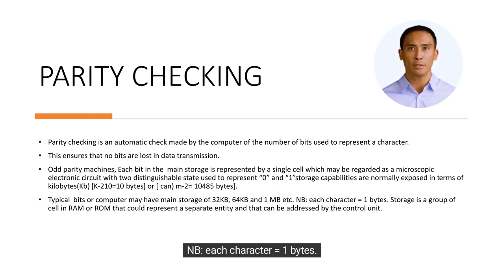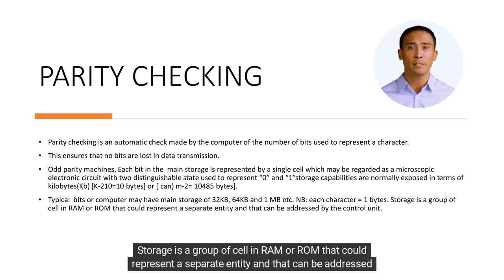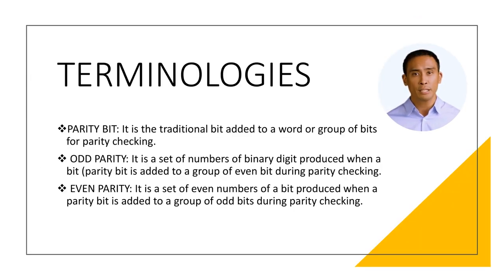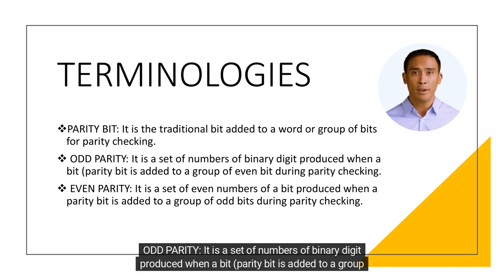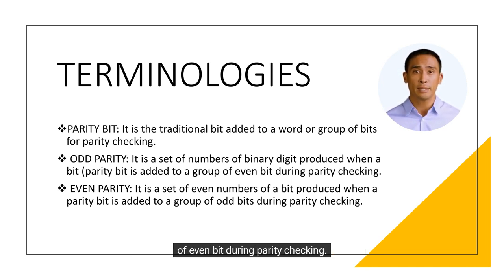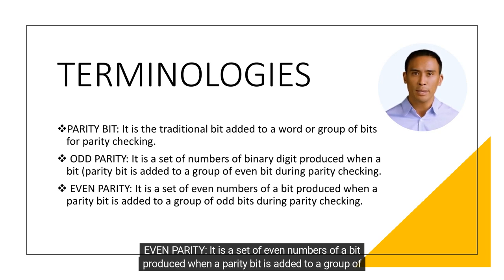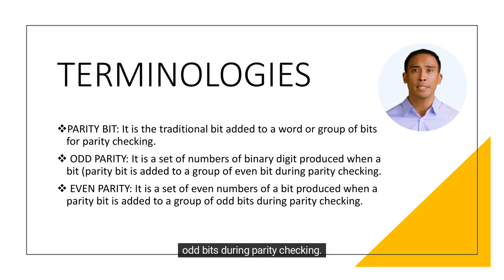Storage is a group of cells in RAM or ROM that can represent a separate entity and can be addressed by the control unit. Terminologies: parity bit — the traditional bit added to a word or group of bits for parity checking. Odd parity — a set of odd numbers of binary digits produced when a parity bit is added to a group of even bits during parity checking. Even parity — a set of even numbers of bits produced when a parity bit is added to a group of odd bits during parity checking.